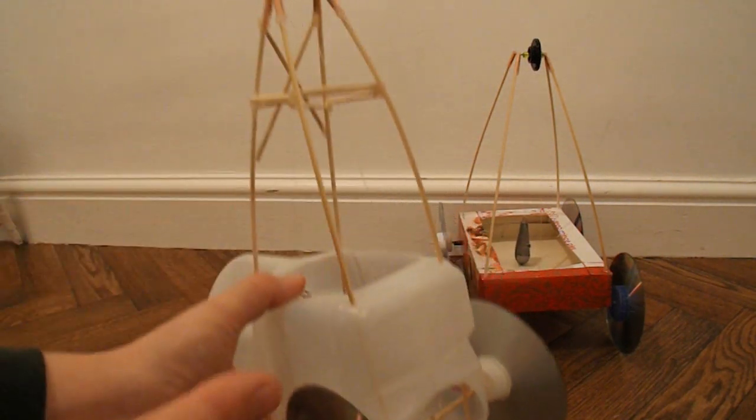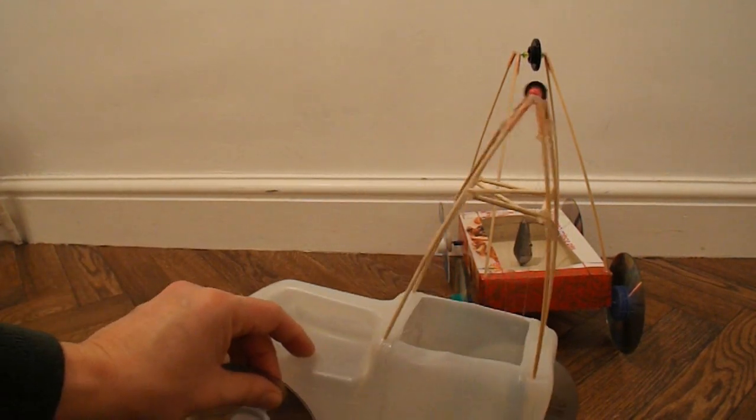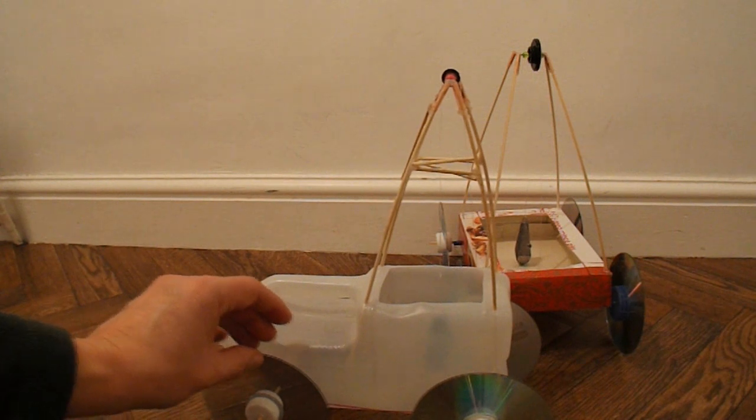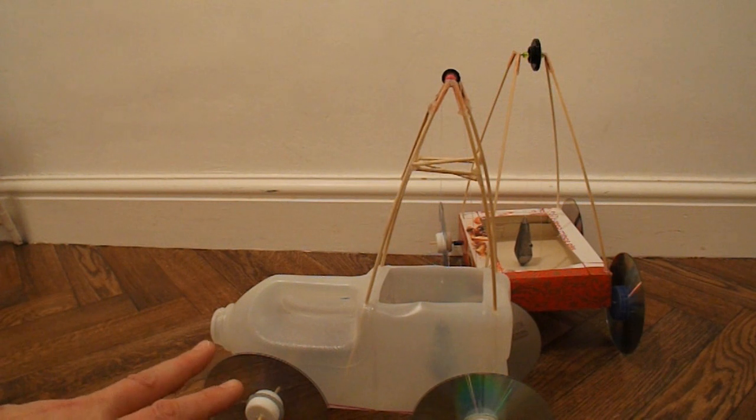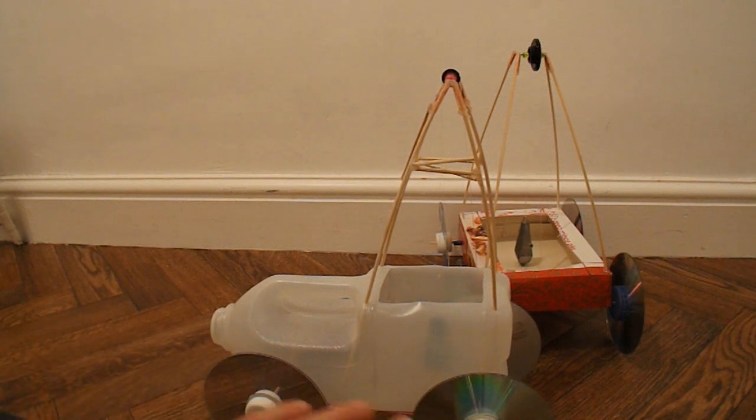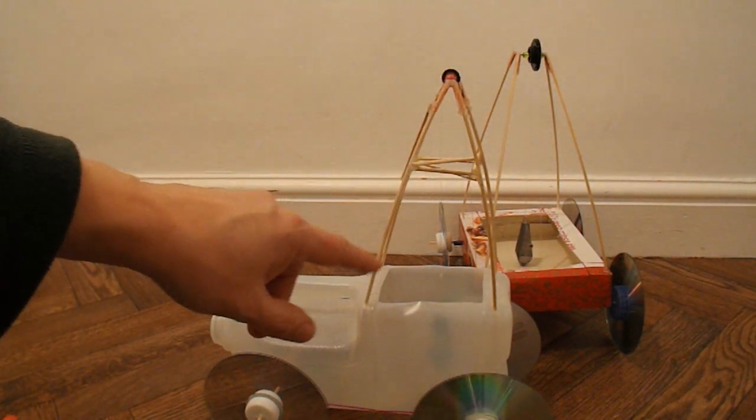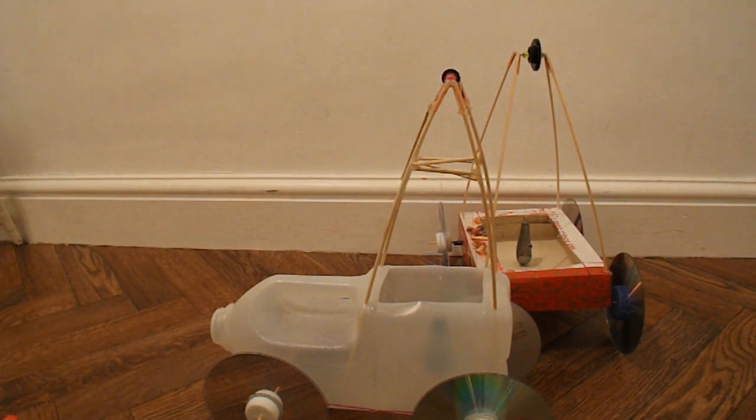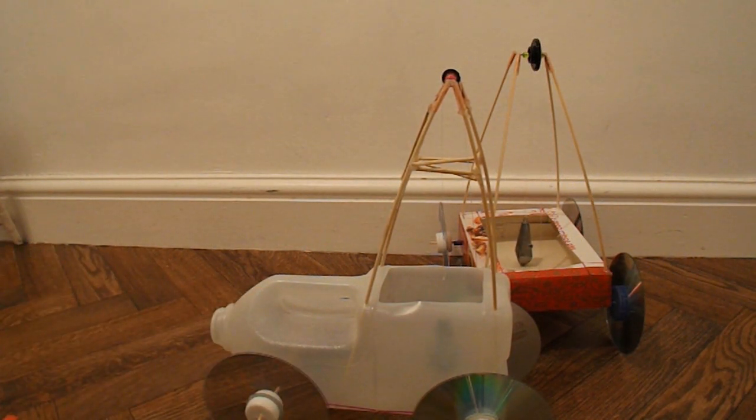So, this car is all the components from the previous car, which was made from plastic packaging. But I've done away with the chassis and replaced it just with this milk carton. The wheels are the same. The axles are the same. The tower is the same. The pulley is the same. The weight is the same. So, any improvement is down to the change in the chassis.